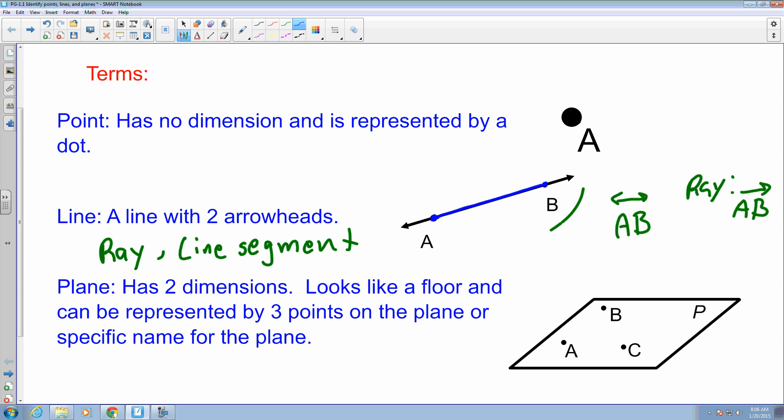They would represent the line segment as AB with a bar on the top. So those are the differences.